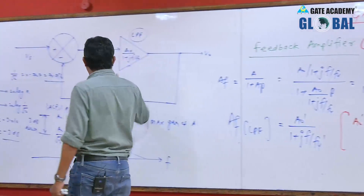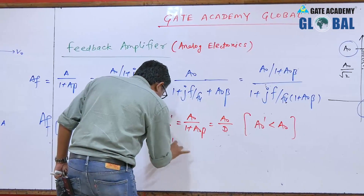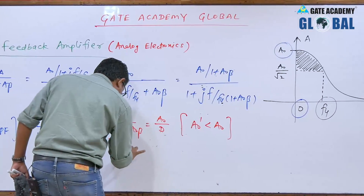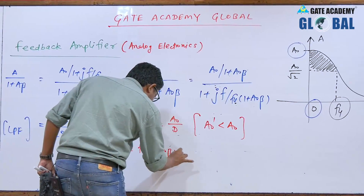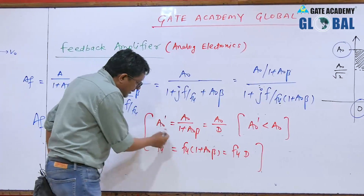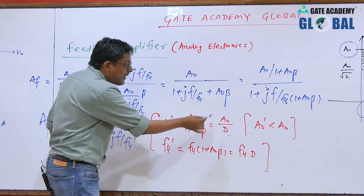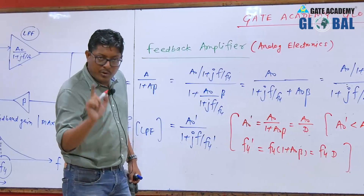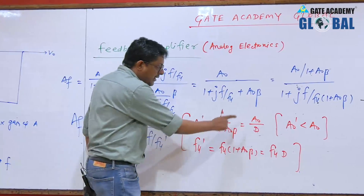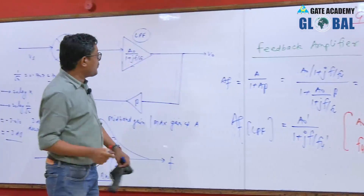Overall gain of this amplifier decreases by the factor of D — where D is the desensitivity (1 plus A0·beta). So A naught dash is less than A naught. And FH dash, the higher 3dB frequency with feedback, equals FH into (1 plus A0·beta), that means FH into D. There are two results: higher 3dB frequency with feedback increases by the factor of D, and mid-band gain with feedback decreases by the factor of D.